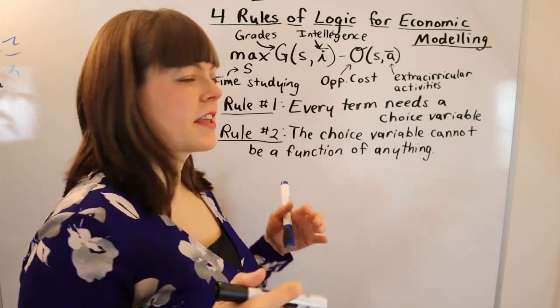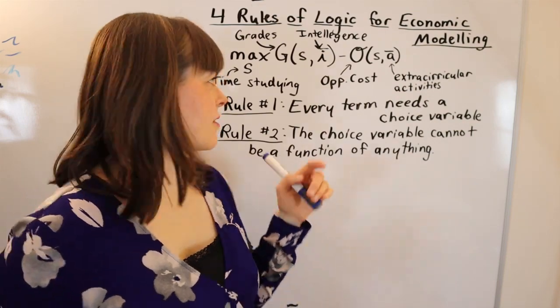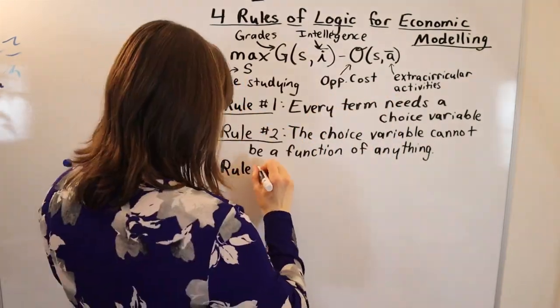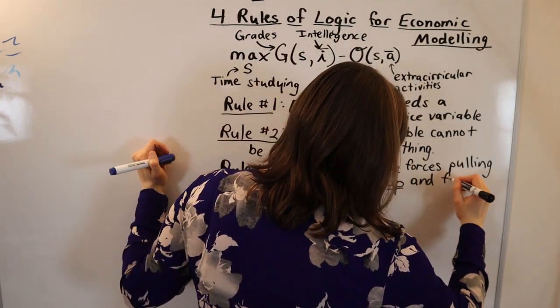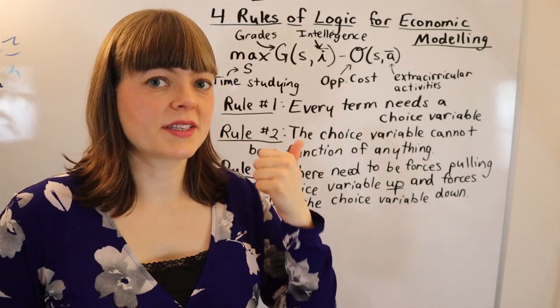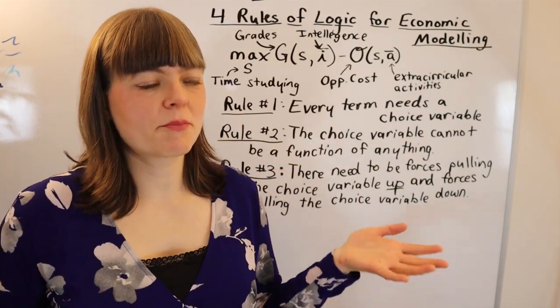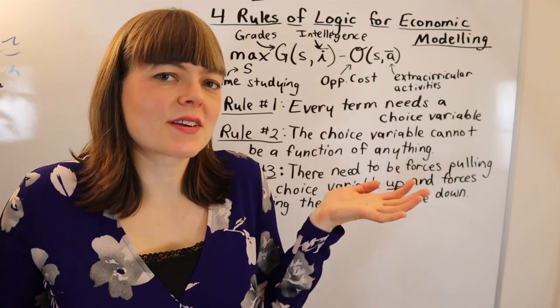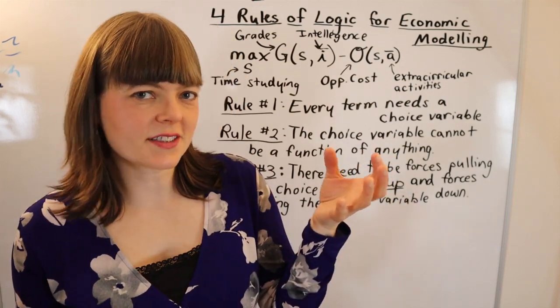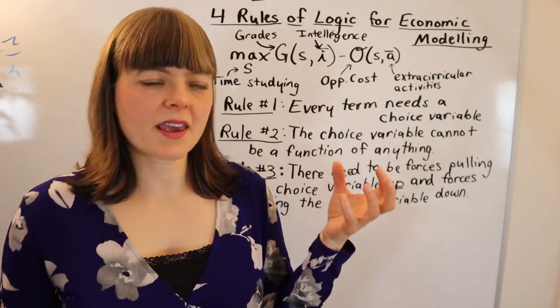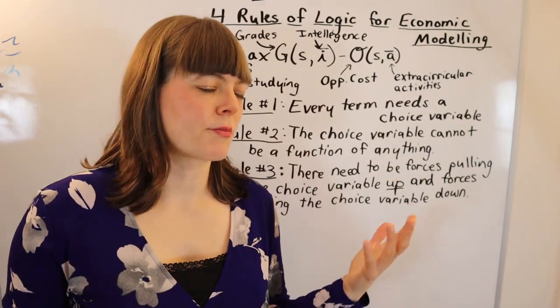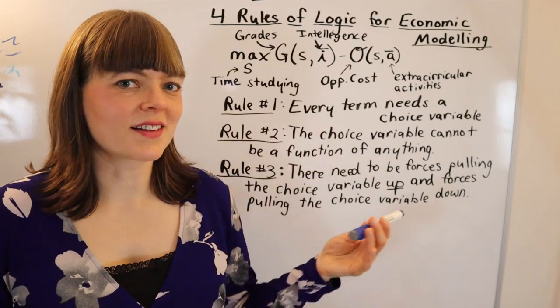Rule number three for economic modeling is that there needs to be forces in your model that pull your choice variable up and also forces that pull your choice variable down. If there's not forces pulling it both up and down, the solution to your model is either going to be zero or infinity, and both of those are trivial cases. Why do you even need to build a model? You need to make sure that your model is capturing trade-offs. That's the point of economic thinking—we're thinking carefully about the trade-offs that motivate human behavior, firm behavior, and government behavior.